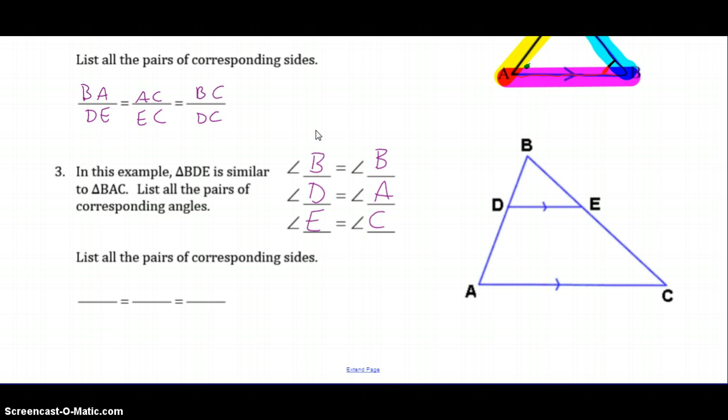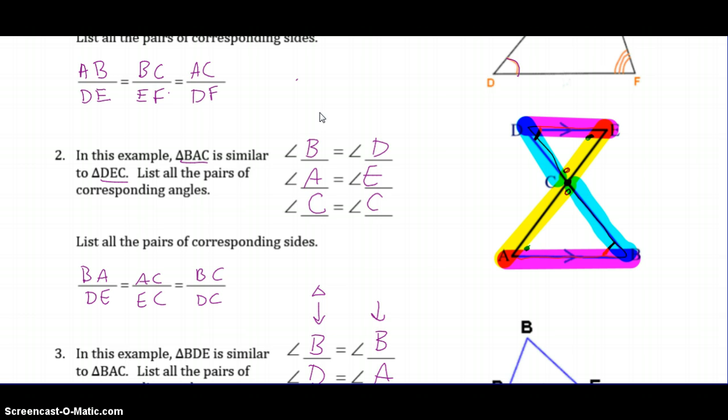You might have noticed when I set these up, I'm very strategic in that BDE are all angles in the same triangle. BDE are the three angles in the small one, and EAC are the three angles in the large one. I do that on purpose just to make it really clear for me here, and it also helps me with further steps so I don't mix things up. But I've done that all the way along.